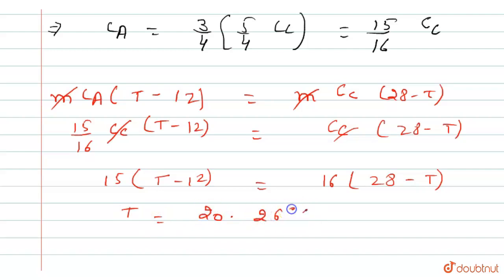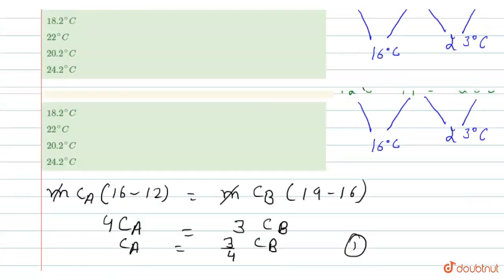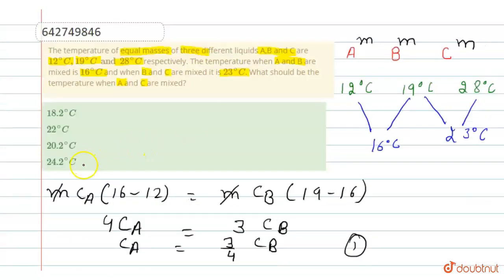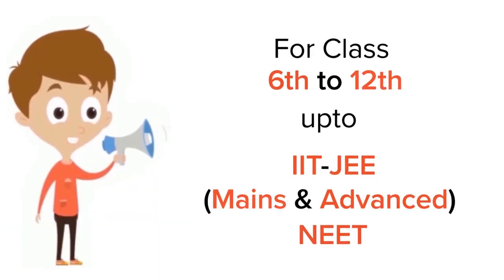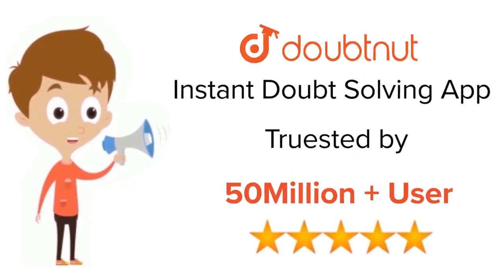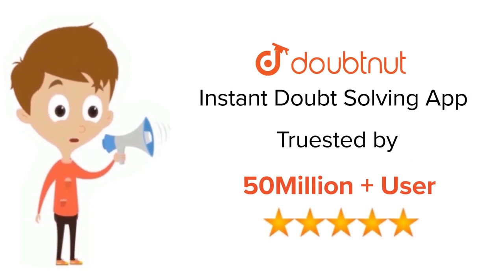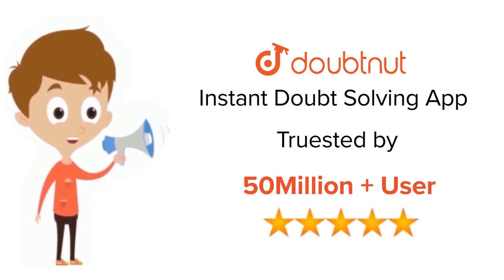The third option — 20.2°C — is the answer. I hope you understand the explanation. Thank you. For class 6 to 12, IIT JEE, and NEET level, trusted by more than 5 crore students — download the DoubtNut app today.